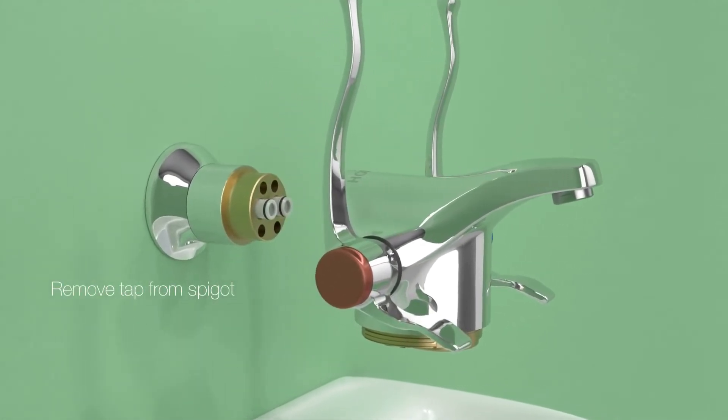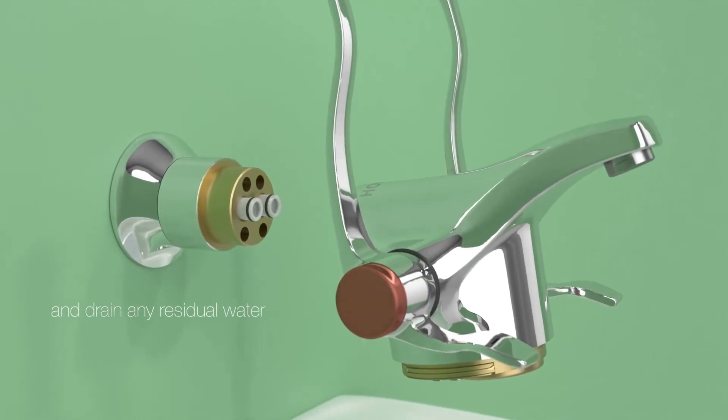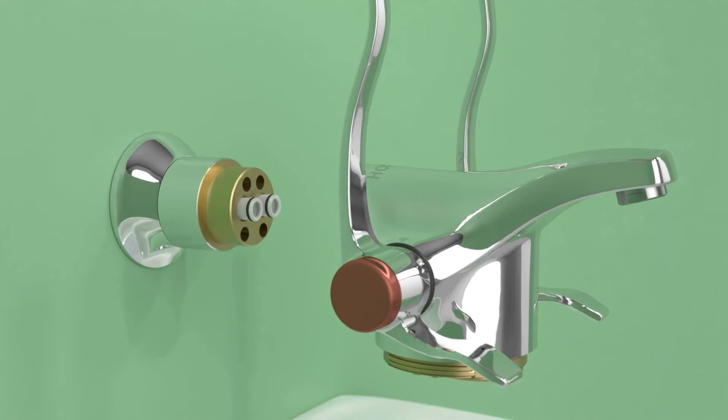Pull the OptiTherm away from the panel horizontally until it is free of the spigot. Rotate the tap to allow residual water to pour out into the basin.